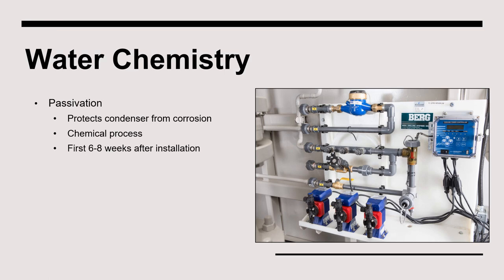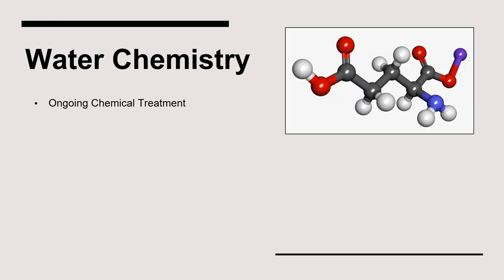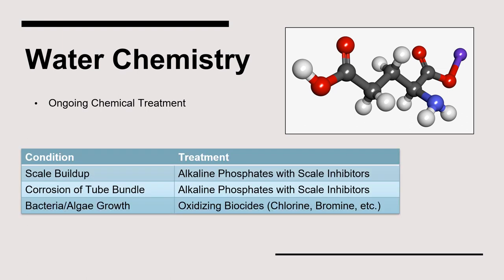Passivation is the process of carefully controlling the pH of the condenser water when it is first placed into operation. During passivation, a chemical process takes place which enhances the original corrosion-resistant galvanized surface of the tube bundles by forming an oxide coating. If passivation is not performed, a condenser's lifetime can be significantly shortened. Once passivation is complete, chemical water treatment continues to be implemented. Several conditions are undesirable, like scale buildup, corrosion, and the development of bacteria or algae. Chemicals like alkaline phosphates, scale inhibitors, and oxidizing biocides are added to the water to manage the condition inside the condenser.